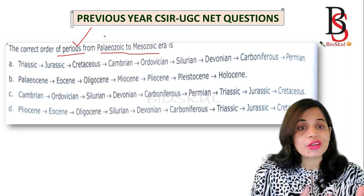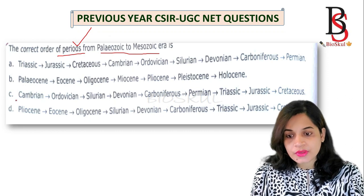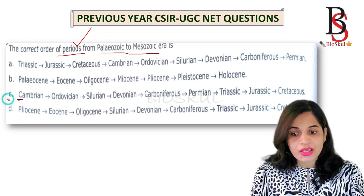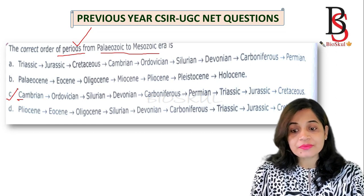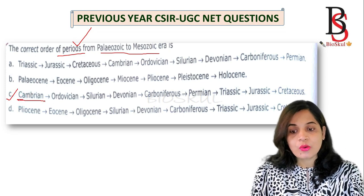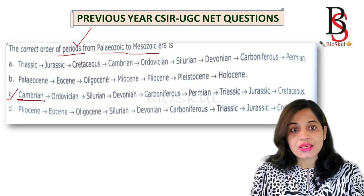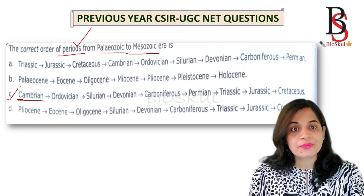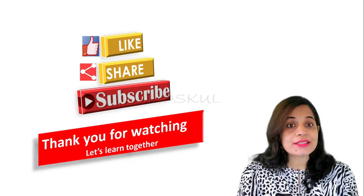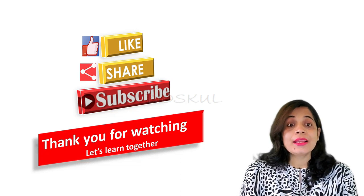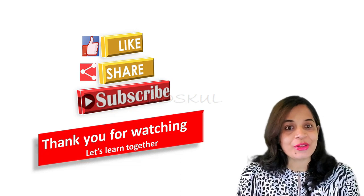So the mnemonic is 'Camels Often Sit Down Carefully Perhaps Their Joints Creak.' Option C is the correct answer because C in the mnemonic stands for the Cambrian period, and only option C has Cambrian as the first entry. This mnemonic will definitely help you memorize the geological time scale in a short time and in a fun way.